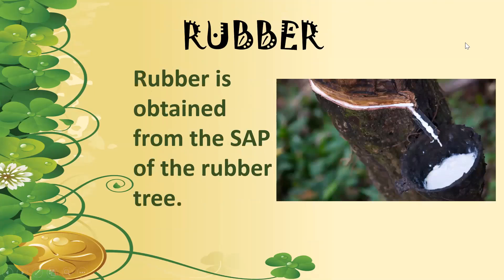Next we have rubber. From the rubber tree, as you can see in this image, there is a scratch on the bark. This is the sap of the tree from when it is scratched. The layer inside the bark has latex inside it — a white liquid known as latex — which is extracted and then converted into rubber, used for different kinds of purposes in our life.